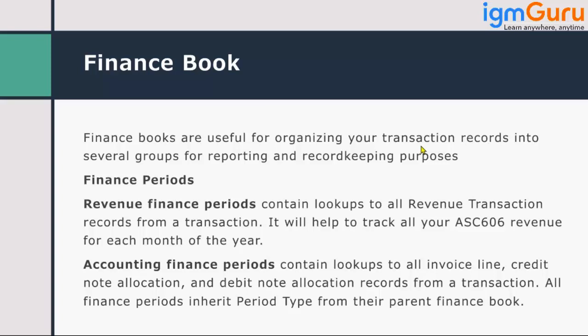What this finance book is — it is basically a way of organizing all the transactions based on periods. All transactions are tracked under the legal entity, but it gives you more reporting capability: in which financial period, what was my revenue, what were my sales figures, what transactions happened, how much invoice was generated, and how much revenue recognition happened.